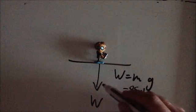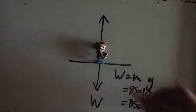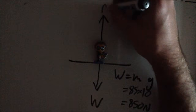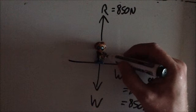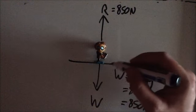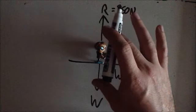But if this was the only force acting on him, he'd be plummeting downward. So when he pushes down with 850 newtons, there is a reaction force which also equals 850 newtons. So he can stand still without falling through the floor. The forces acting on him are balanced, that means he's not moving in this case.